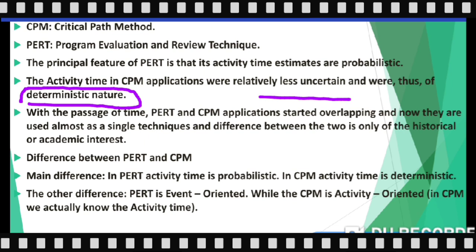With the passage of time, PERT and CPM applications started overlapping, and now they are used almost as a single technique. The difference between the two is of only historical and academic interest. The only real difference is in their activity time estimates: PERT is probabilistic in nature and CPM is deterministic in nature.